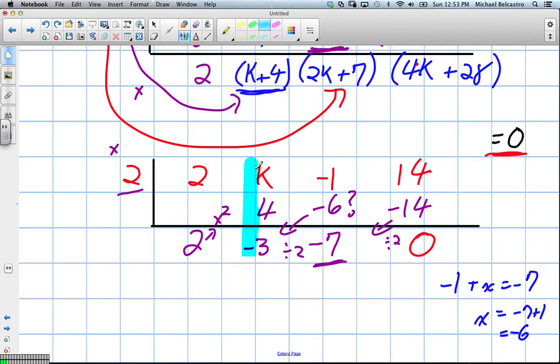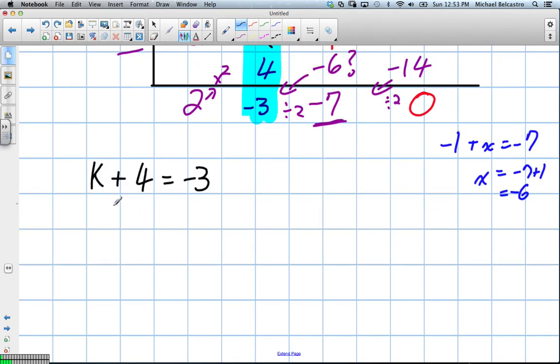I guess the original part we didn't have to really go through, but it was just to give you an idea of what we were doing. So this becomes our new equation: k plus 4 equals negative 3. I'll move 4 over. k is equal to negative 3 minus 4. k equals negative 7.